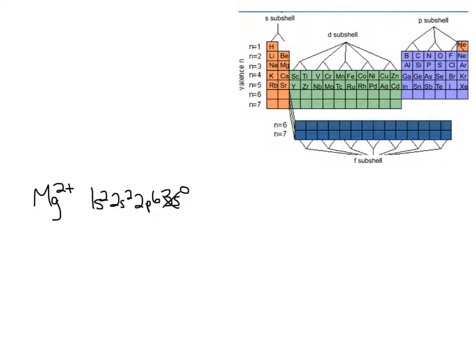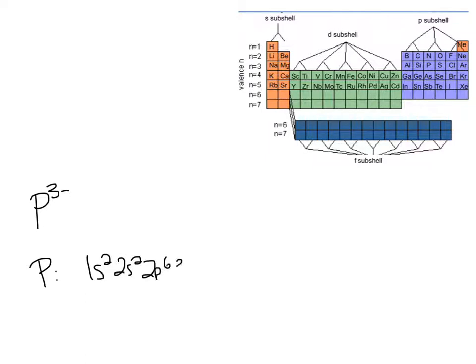Let's consider another one. Let's consider something that forms a negative charge. So let's consider P3-. Again, I find it helpful to write out the electron configuration of the atom. 1s2, 2s2, 2p6, 3s2, 3p5 is phosphorus.